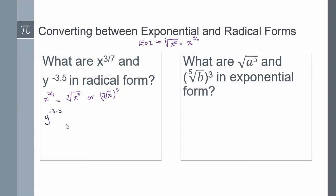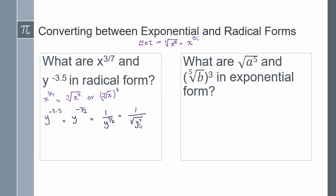y to the power of negative 3.5 is the same as y to the power of negative 7 halves. Since my exponent is negative, I rewrite it as a positive exponent: 1 over y to the power of 7 halves. Here, 7 is my exponent and 2 is the index of my radical. So my final answer is 1 over the square root of y to the power of 7.